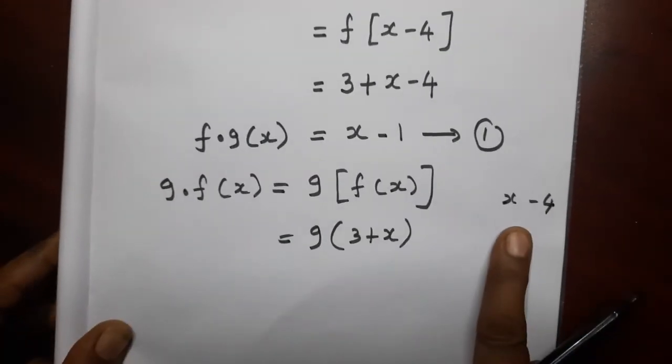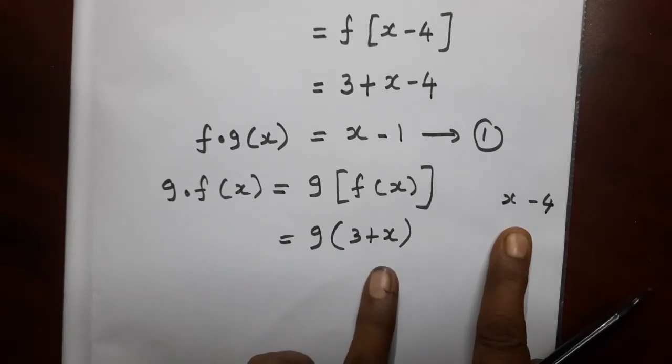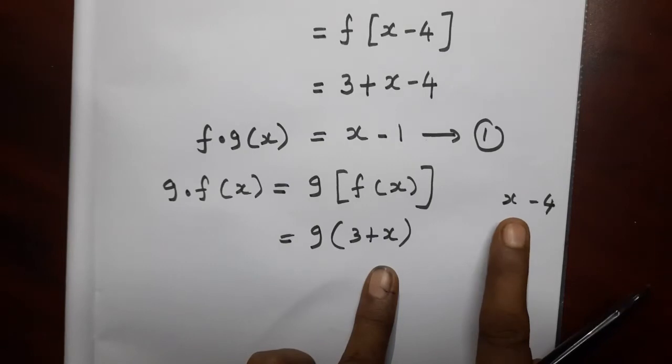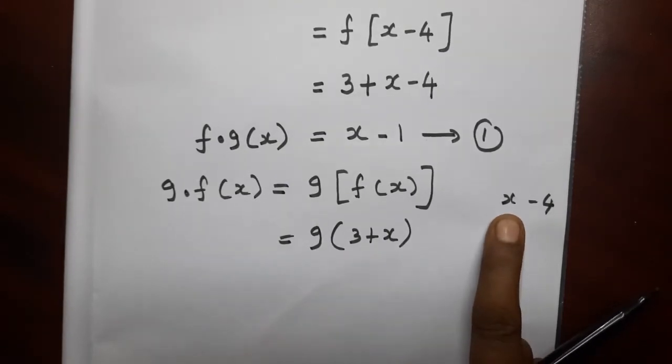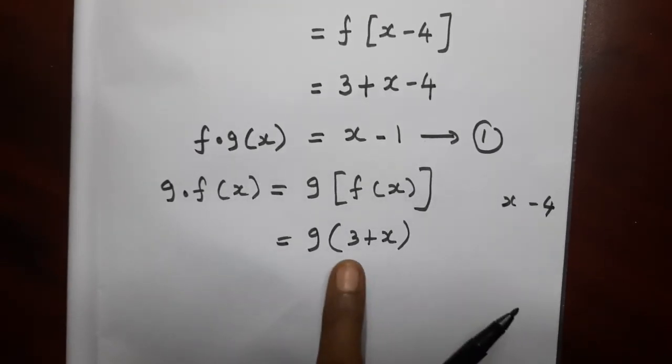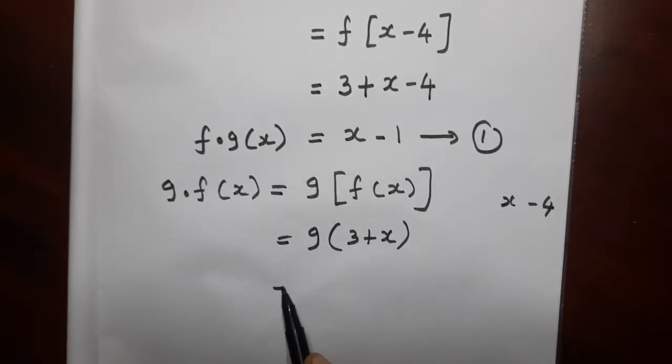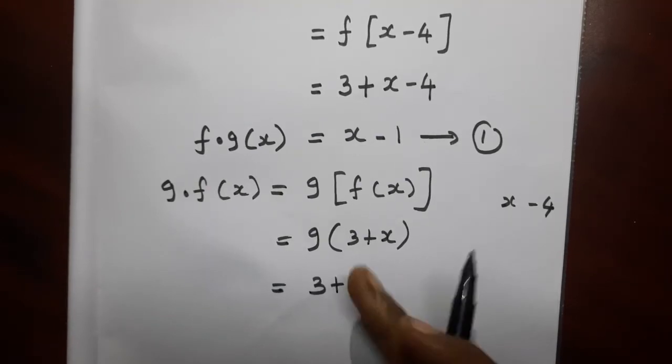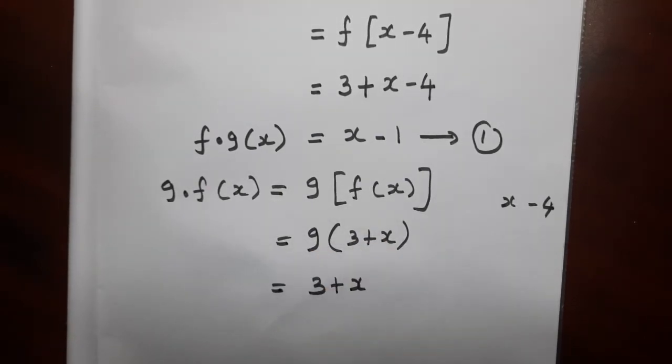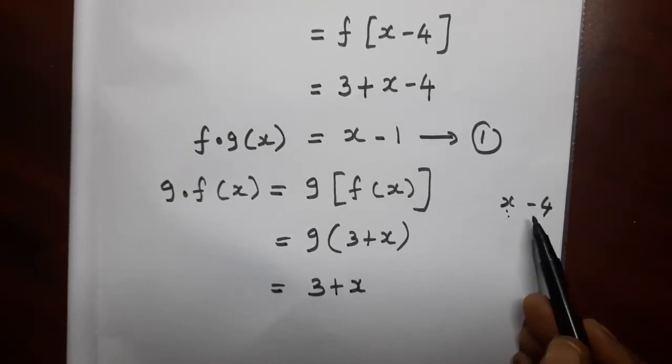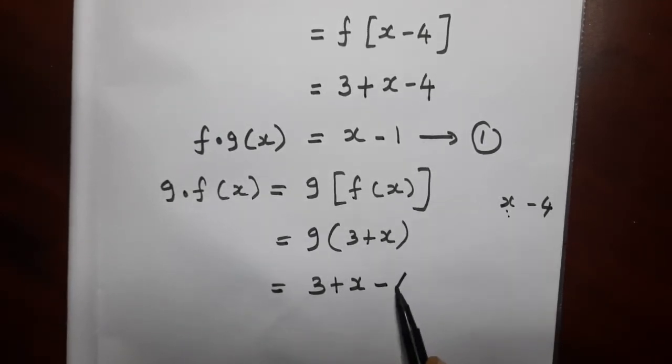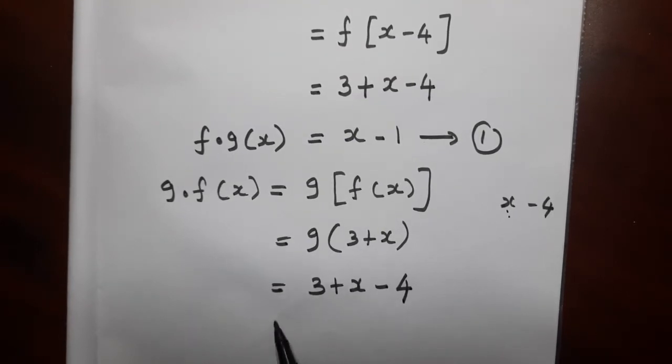This is the g of x function. We have g of 3 plus x. That means in the g of x function, in the x place, we substitute this value. The g of x function is x minus 4. In the x place, we substitute the bracket value. So 3 plus x minus 4 is equal to x. Then 3 minus 4 is equal to minus 1, so x minus 1.